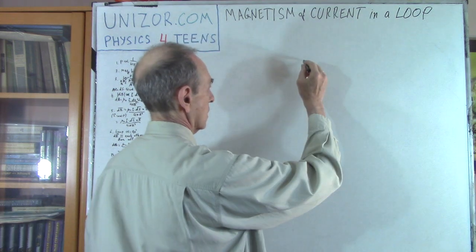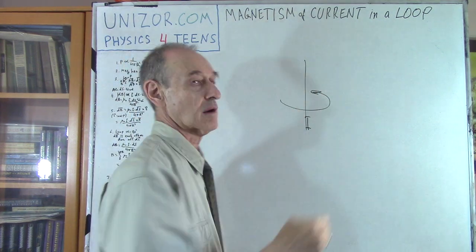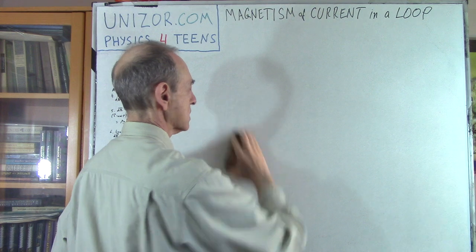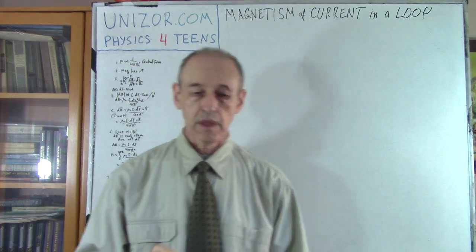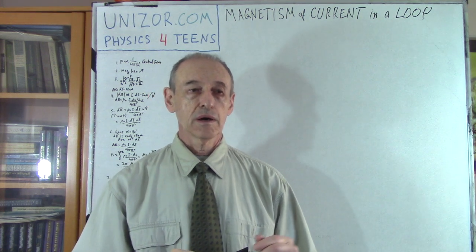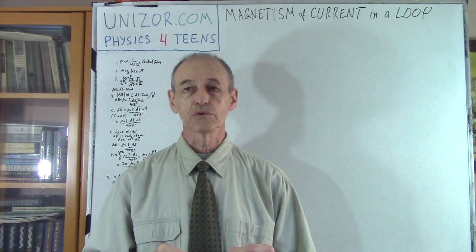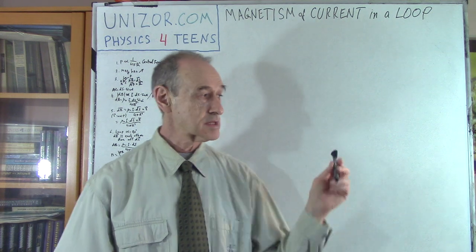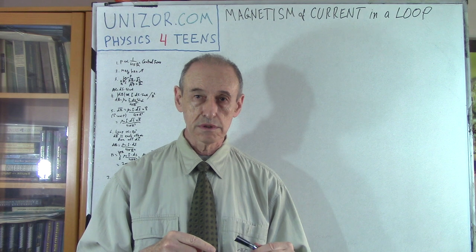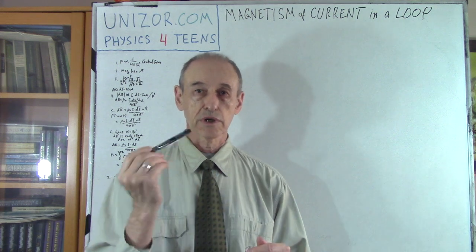Remember? So if this is the current, the magnetic field lines are around it. Today we'll continue talking about this, but on a more fundamental and slightly more mathematical level. It will allow us to establish a certain formula, or law, which is the foundation of what I was talking about with straight-line current. And I will use it to determine the magnetic field at the center of an electric current in a loop.